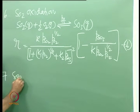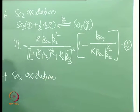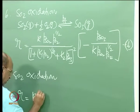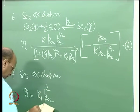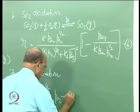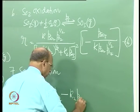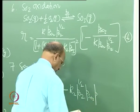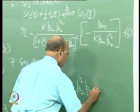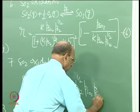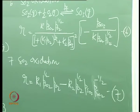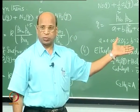Another equation for SO₂ oxidation - one of the oldest equations used directly. r equals K₁ times partial pressure of SO₂ to the power of half times partial pressure of O₂, minus K₂ times partial pressure of O₂ times partial pressure of SO₂ to the power of minus half. This is equation 7.